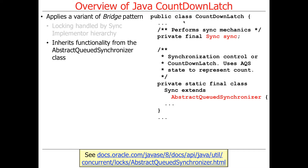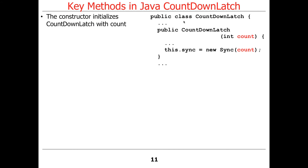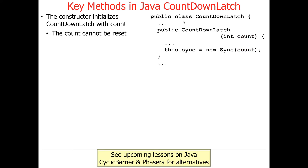It extends and has a thing called sync, and it leverages the ability of the abstract queue synchronizer to wake multiple things up when needed. The constructor is initialized with a count — you pass a count into the constructor and it initializes the sync field with that count. That's the total number of things that are going to be waiting. The important thing to remember with CountDownLatch is the count can't be reset once you've set it.